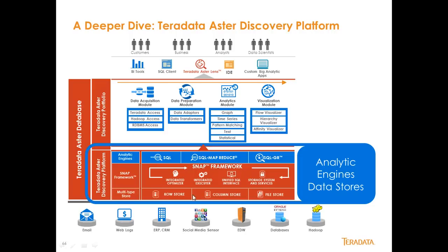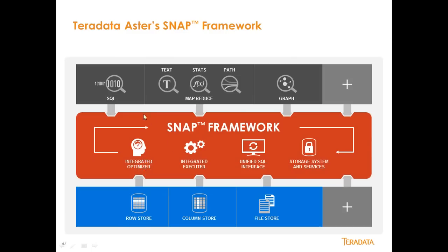What's really critical to understand is the SNAP framework, which is basically a set of three things: analytical capabilities, a file store or data store, and a set of tools that allow you to take advantage of all these things without jumping between different tools. You can write a SQL query embedded inside a subselect that is a SQL MapReduce query or a SQL Graph query, and the interpreter automatically knows what to do with it — you don't need a different client for graph, statistics, pathing, or text. They all work together through the SNAP framework.